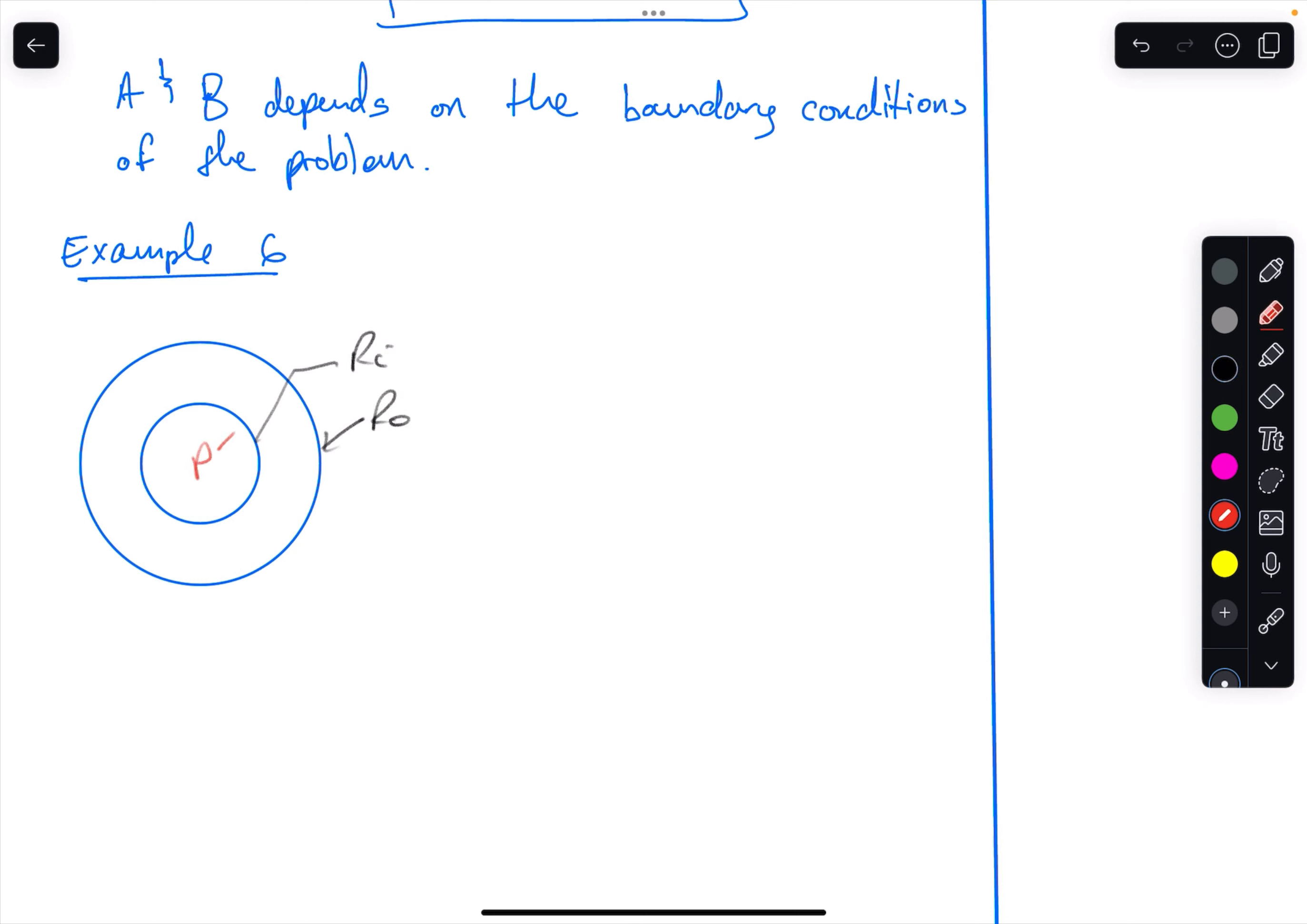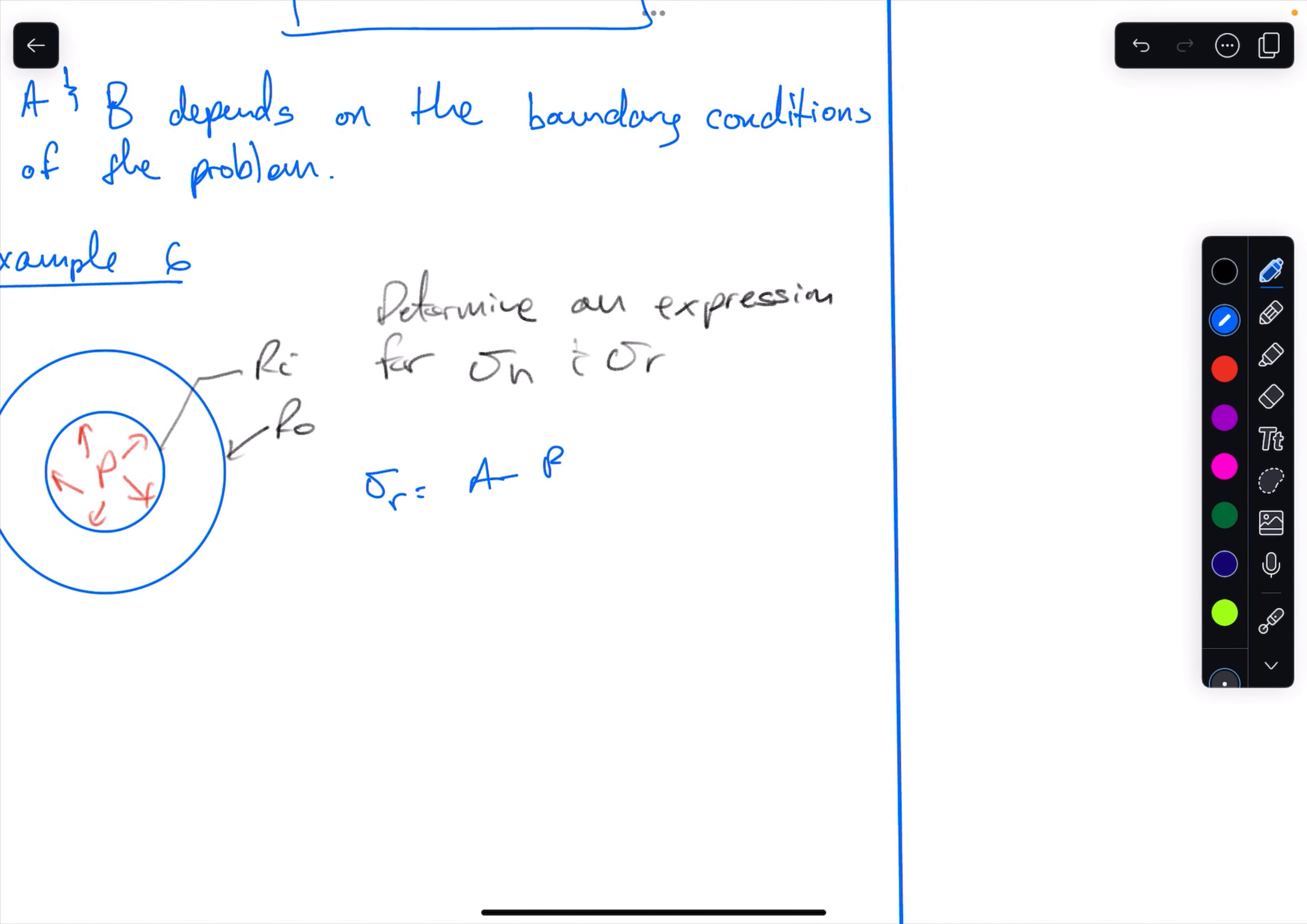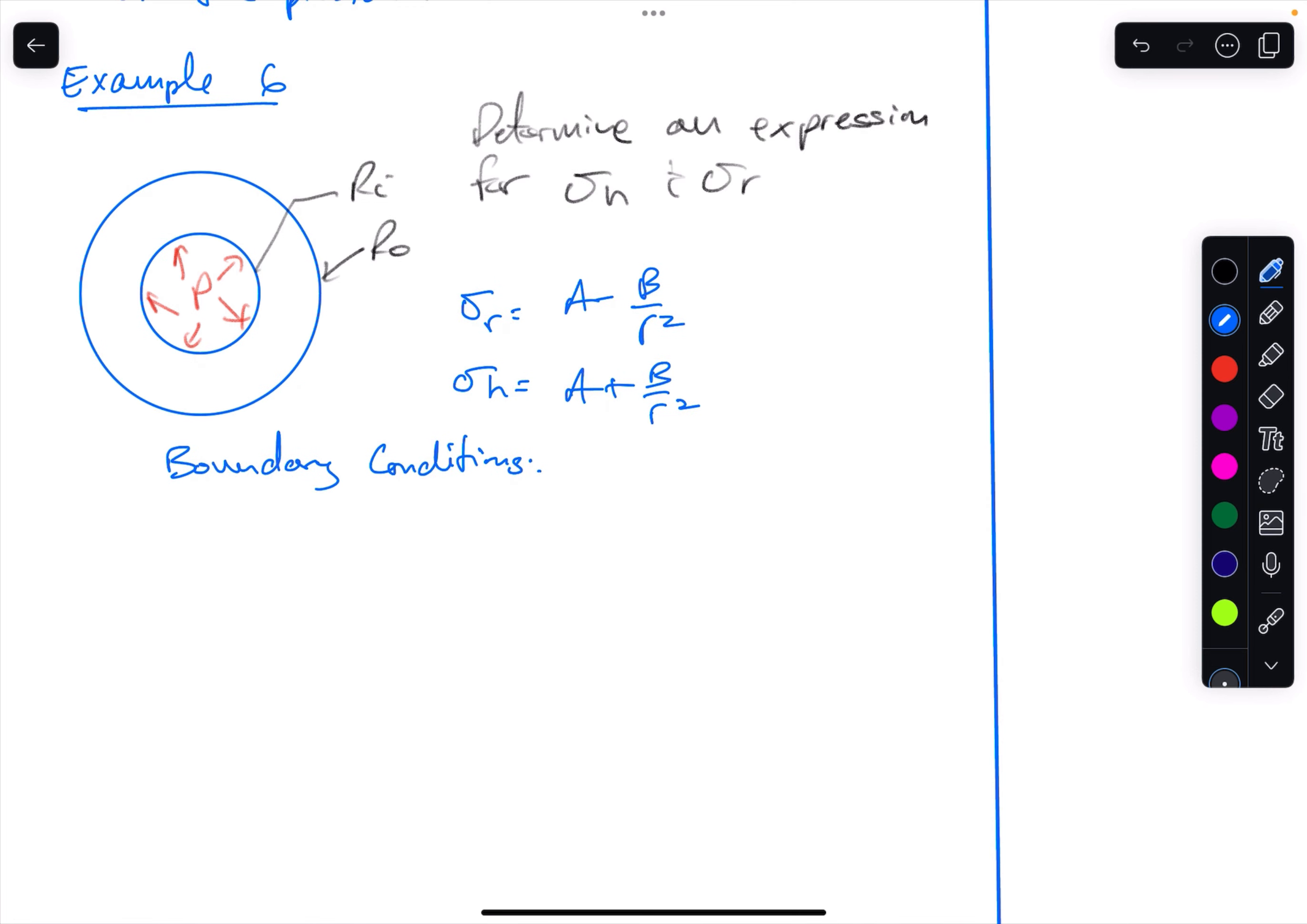You have a pressure on the inside, internal pressure, and I want us to calculate the terminal expression for sigma hoop and sigma radial. We start off, we know Lame's equation is given here: sigma r equals A plus B on r squared, and sigma hoop is A plus B on r squared. We said we needed boundary conditions that come from the application of the pressure.